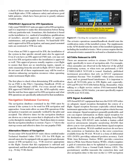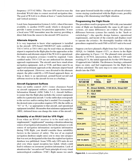Each Wide Area Reference Station (WRS) provides correction data to a Wide Area Master Station (WMS), which computes a grid of correction data to be uplinked to a geostationary satellite (GEO) from a ground-earth station (GES). The geostationary satellite transmits the correction data, and also navigation data, to the user on the L1 GPS navigation frequency, 1575.42 MHz. The user GPS receiver uses the downlink WAAS data to correct received navigation data.